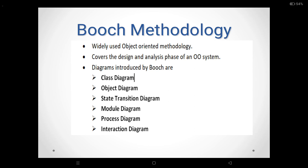The class diagram describes the roles and responsibilities of objects. The object diagram describes the behavior of the system in terms of scenario. The state transition diagram describes the state and event of the system. The module diagram maps out where each class and object should be declared. The process diagram is mainly used to determine which process to allocate. The interaction diagram describes the behavior of the system in terms of scenario.